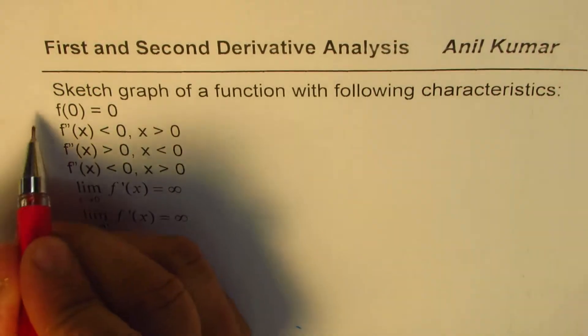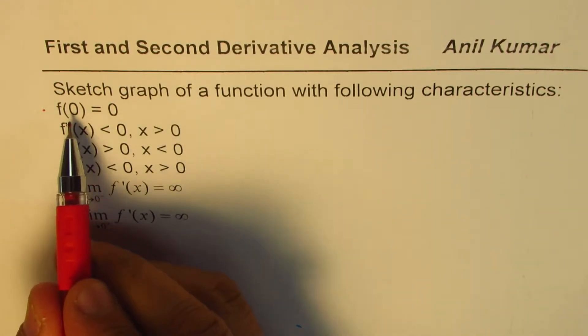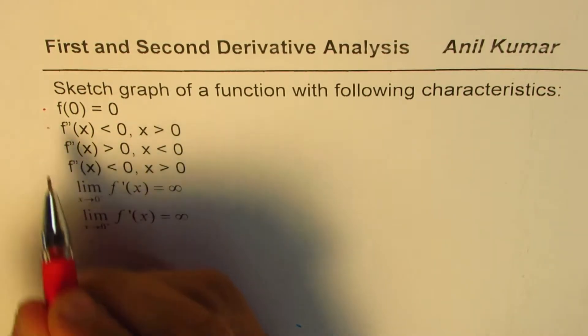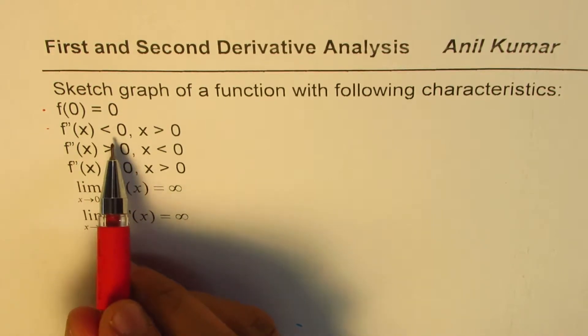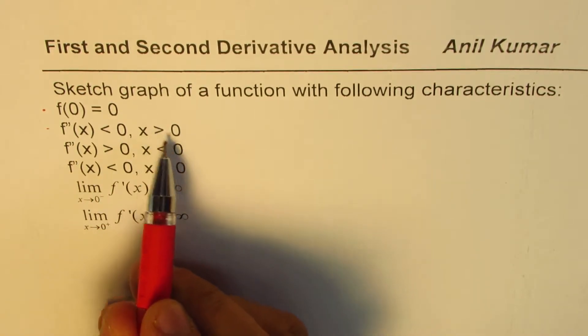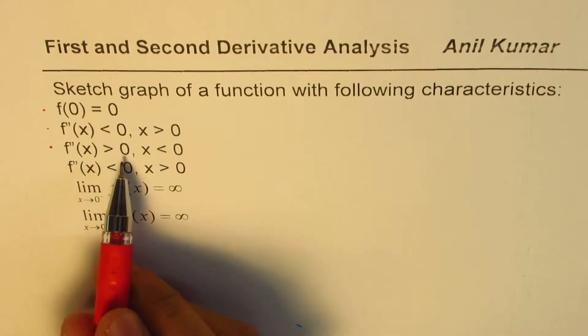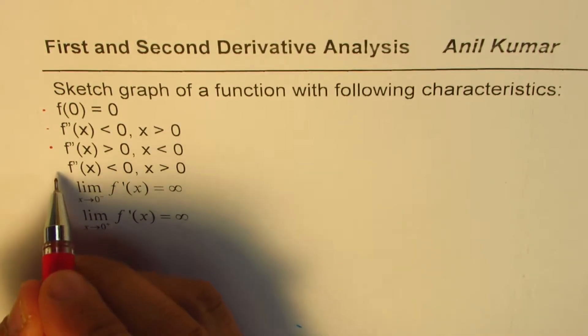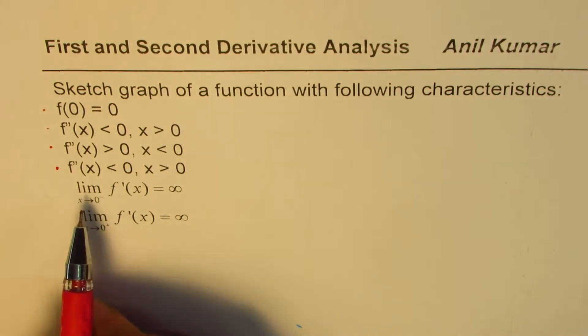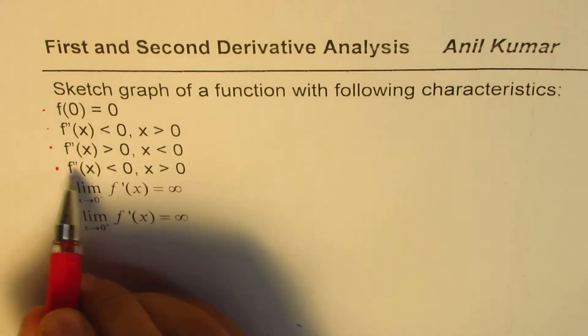f(0) equals 0, that means value of the function at 0 is 0. Second derivative of the function is less than 0 for x greater than 0. Second derivative of the function is greater than 0 for x less than 0.